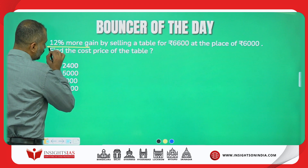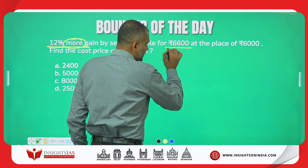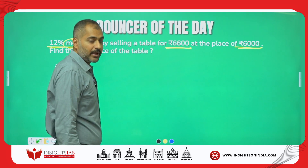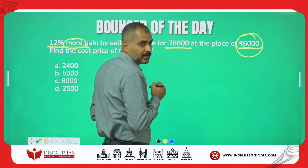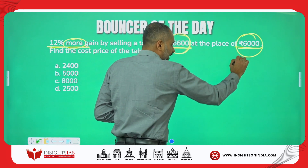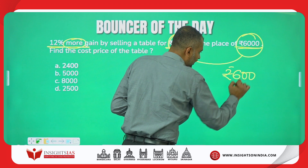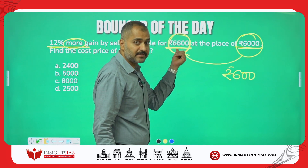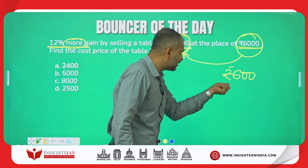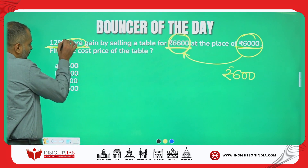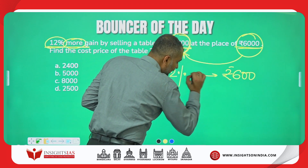Look here: 12% more gain by selling a table for ₹6,600 at the place of ₹6,000. When selling at ₹6,000 he is already making a profit, but at ₹6,600 there is definitely more profit. The difference in money is ₹600 — you can see that 6,600 minus 6,000 equals 600 — and according to the question, this difference corresponds to 12%.